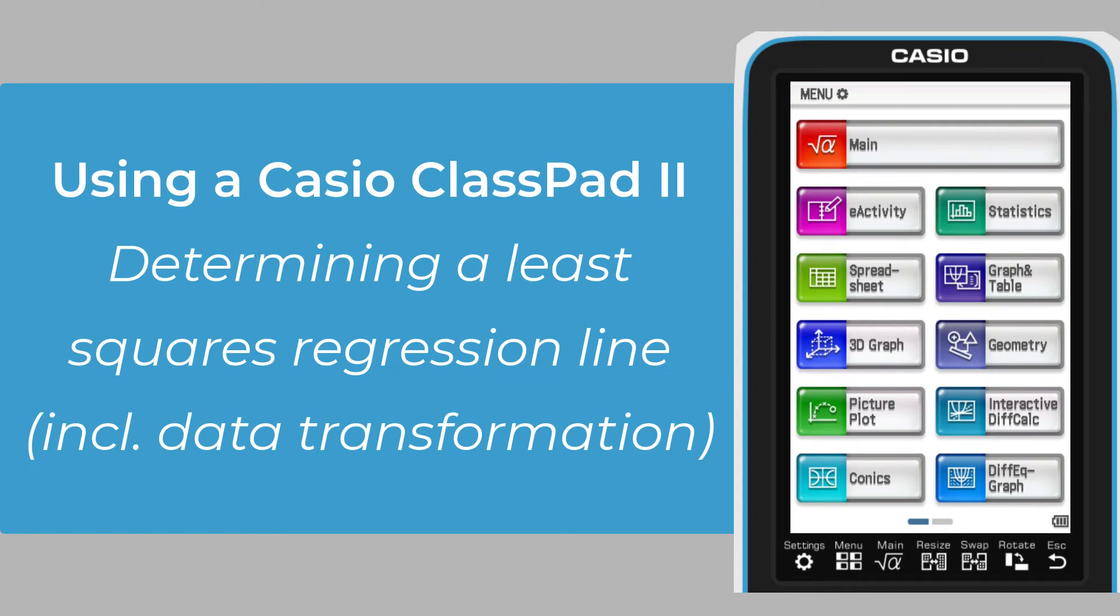This video will demonstrate the determination of a least squares regression line using the Casio ClassPad 2. This regression line will be fitted to bivariate data upon which a transformation has been performed. This additional step is required when presented with data suggesting a non-linear relationship between variables.